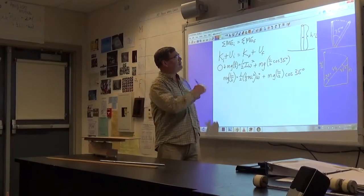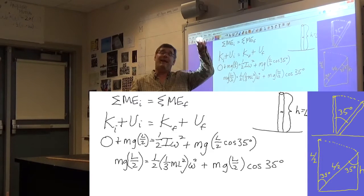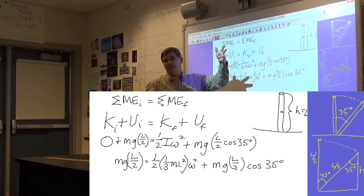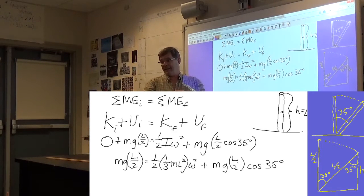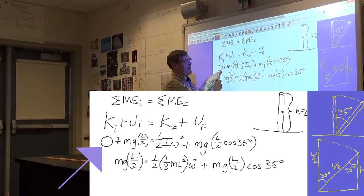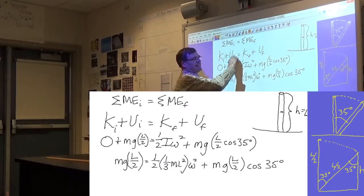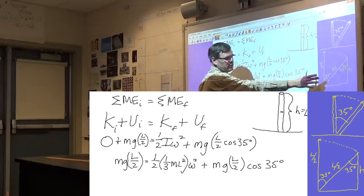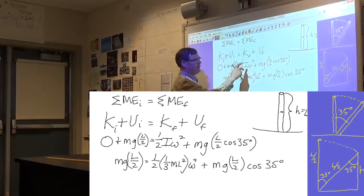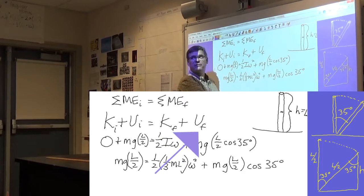So we're going to use conservation of mechanical energy to do this problem. We know that falling objects, they start off with potential energy, and as they fall, that potential energy becomes kinetic energy. So that's what we're going to do here. Initially, it's at rest, so there is no kinetic energy, and it has potential energy. And then at some later time point, which we've chosen that to be when the angle is 35 degrees, it will have kinetic energy of rotation now, which is 1/2 I omega squared, and whatever potential energy is left over.